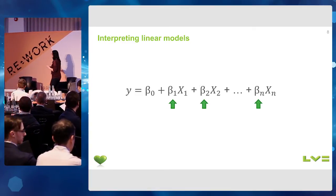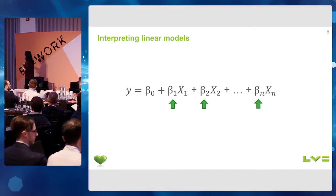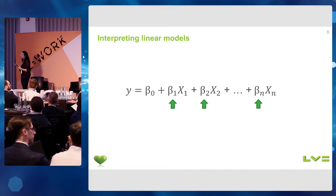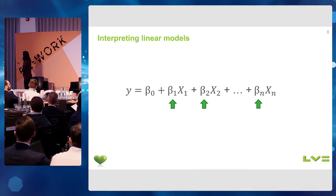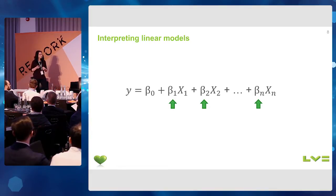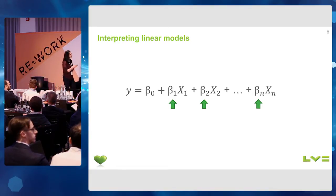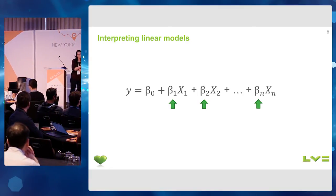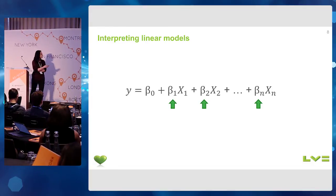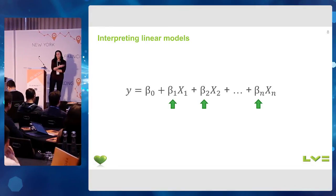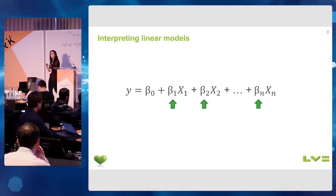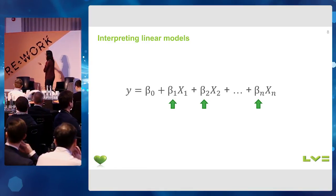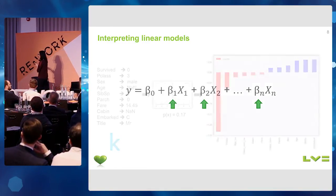For a single claim, the contribution of each variable is given by the coefficient times the actual value of that variable for that particular customer. So if for customer 1 we multiply beta 1 times x1, we get the exact contribution of that variable to that prediction. The same is true for logistic regression — logistic regression is essentially a transformation of this, but the same principle applies. This is why linear models have been traditionally preferred in business scenarios like insurance and finance, because they are very easy to interpret and straightforward.